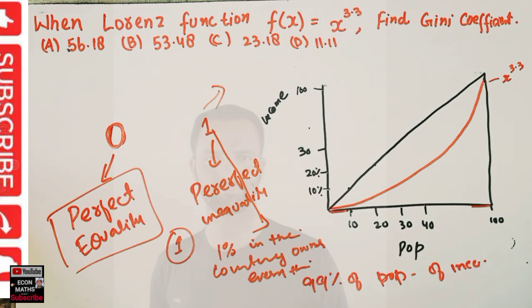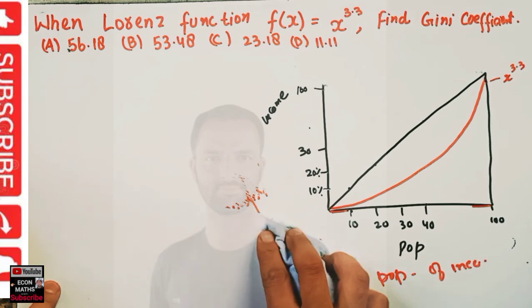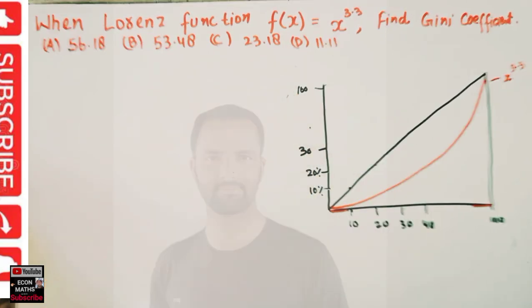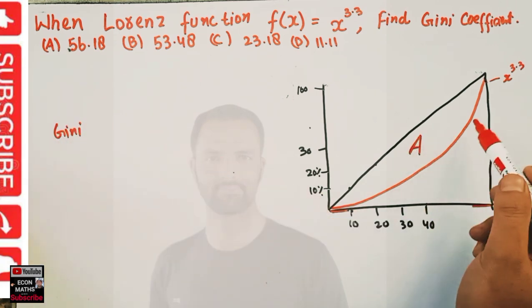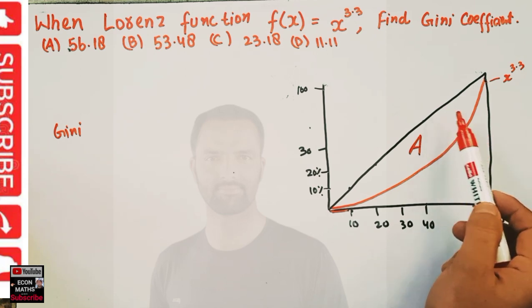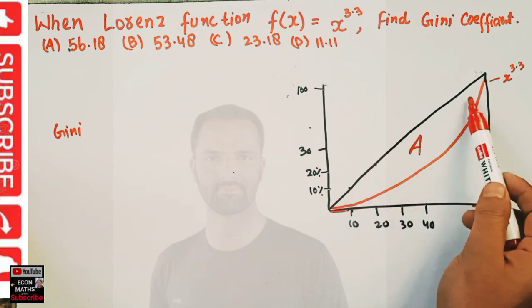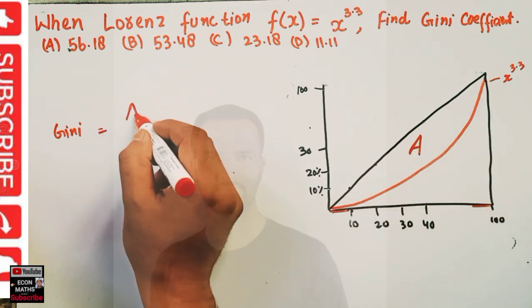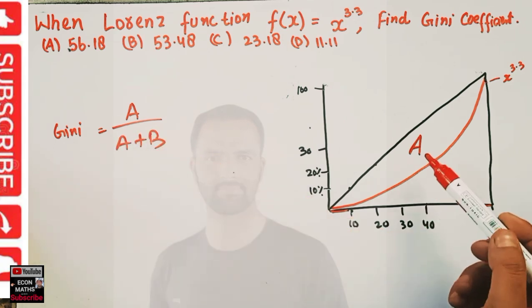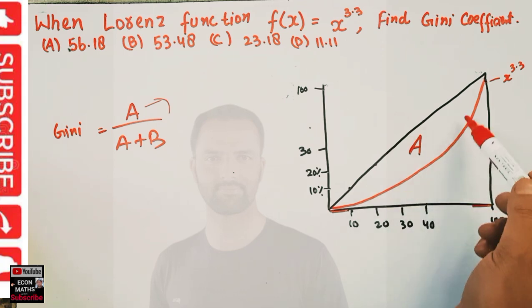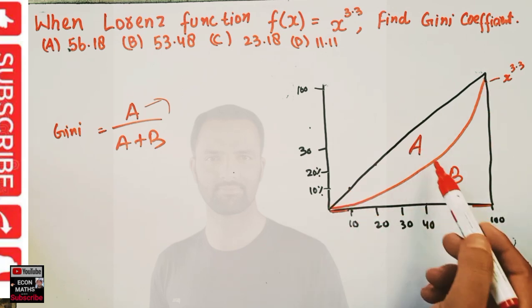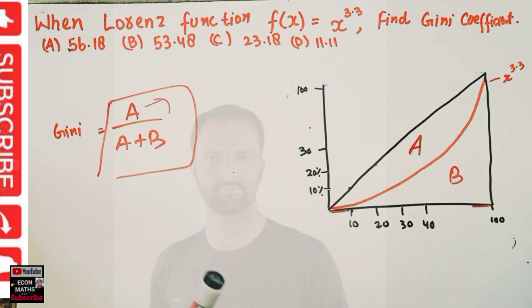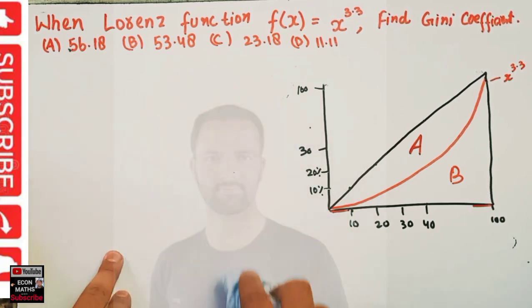Graphically, the Gini coefficient is given by the area above the Lorenz curve and below the line of perfect equality, divided by the total area — that is A divided by (A + B). But since we are given a function, we need to use calculus and integration.